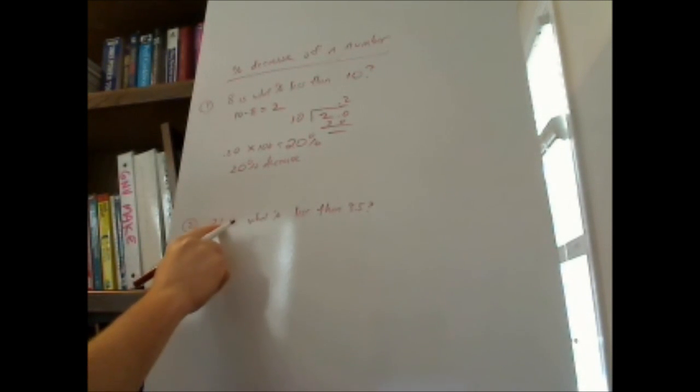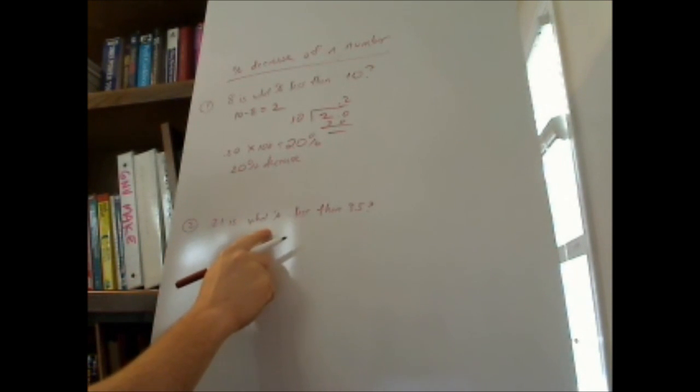The second question is, 21 is what percent less than 35? What's the first thing we're going to do? First thing we're going to do again is find the difference. So, take 35, subtract 21. That's going to give us 14.